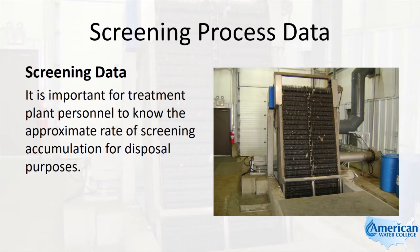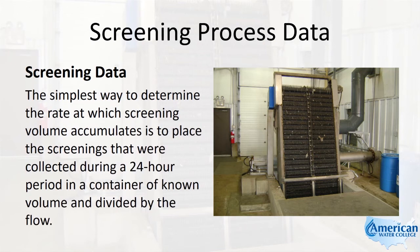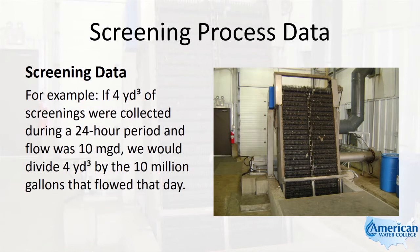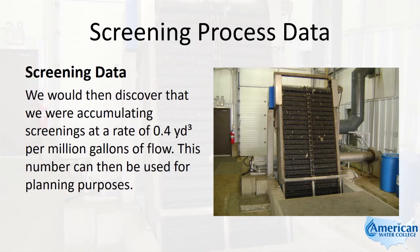It is important for treatment plant personnel to know the approximate rate of screening accumulation for disposal purposes. The simplest way to determine the rate at which screening volume accumulates is to place the screenings collected during a 24-hour period in a container of known volume and divide by the flow. For example, if 4 cubic yards of screenings were collected during a 24-hour period and flow was 10 MGD, we would divide 4 cubic yards by the 10 million gallons that flowed that day, discovering that we were accumulating screenings at a rate of 0.4 cubic yards per million gallons of flow.